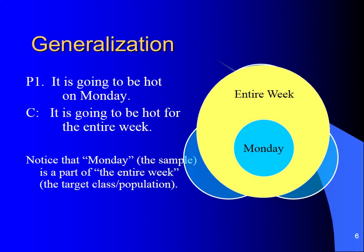Let's take a look at an example of a generalization. In this argument, I'm claiming that it's going to be hot on Monday. Monday is my sample. Going to be hot is my property or feature in question. In my conclusion, I state it's going to be hot for the entire week. So my target is the entire week. I know this is a generalization because the sample, Monday, is a subset of, or a smaller portion of, my target population — the entire week.